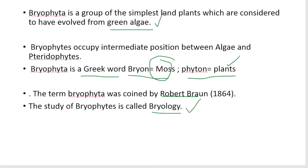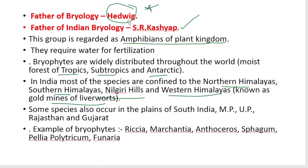To recap: bryophytes are the simplest land plants, considered to have evolved from green algae. The term bryophyte was coined by Robert Braun in 1864. The study of bryophytes is called bryology. The father of bryology is Hedwig and the father of Indian bryology is S.R. Kashyab. Bryophytes are regarded as amphibians of the plant kingdom because they require water for fertilization. Examples are Riccia, Marchantia, Anthoceros, Sphagnum, Polytrichum, and Funaria.